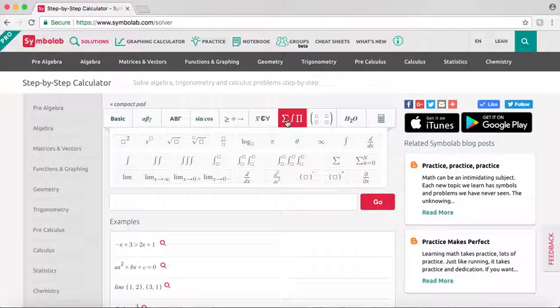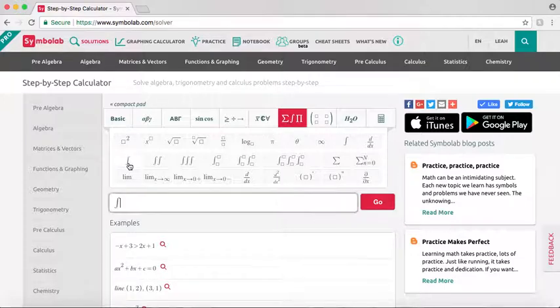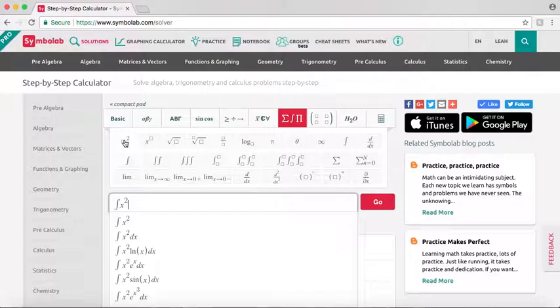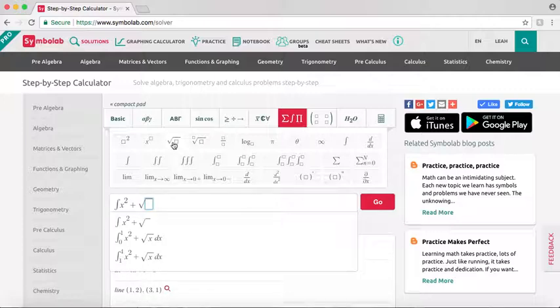Next, you just type in your problem using the pad if needed. As you can see, suggestions will pop up. You can click those if you find the problem you want to use.